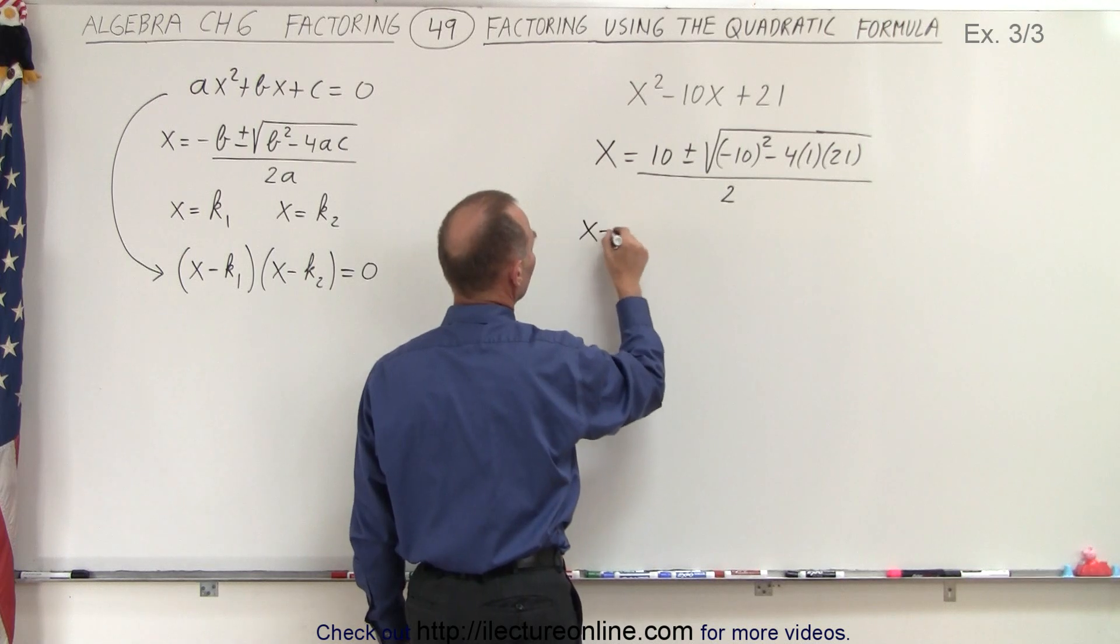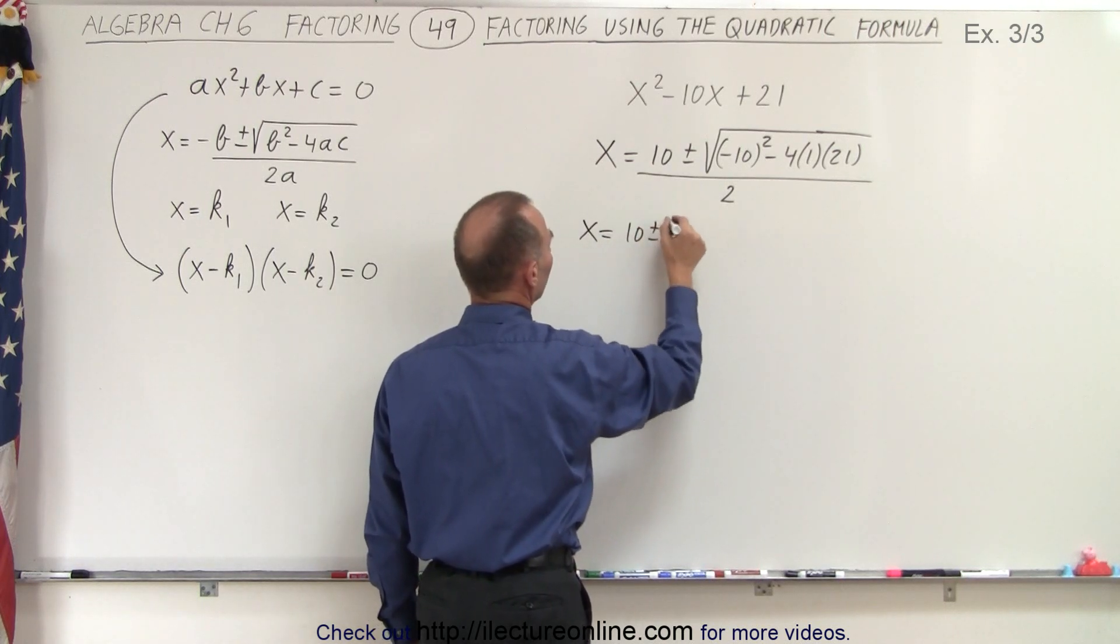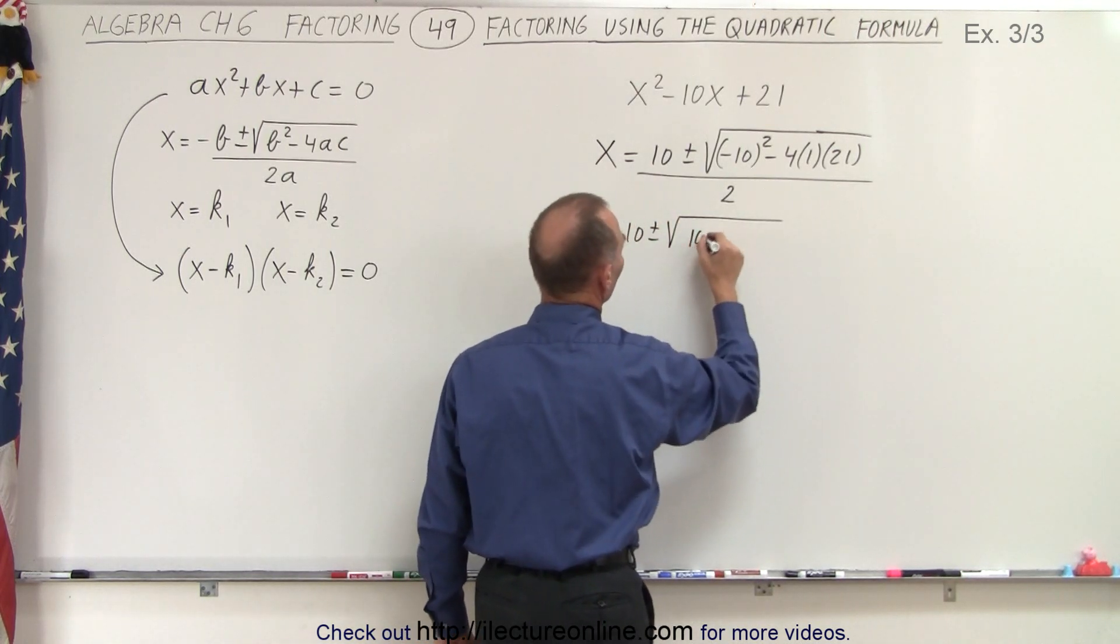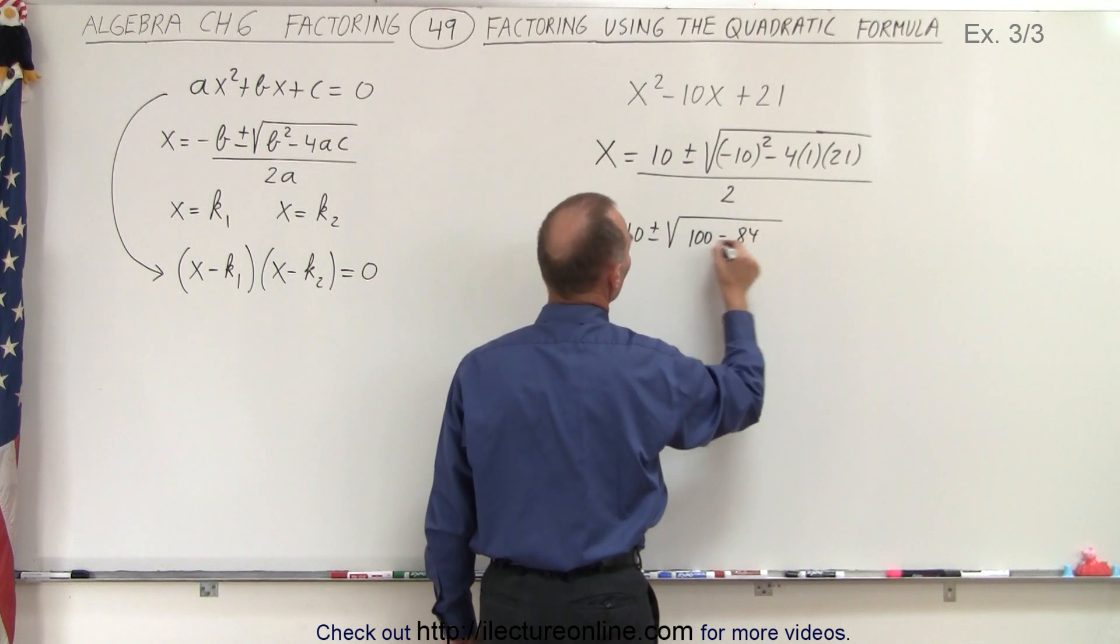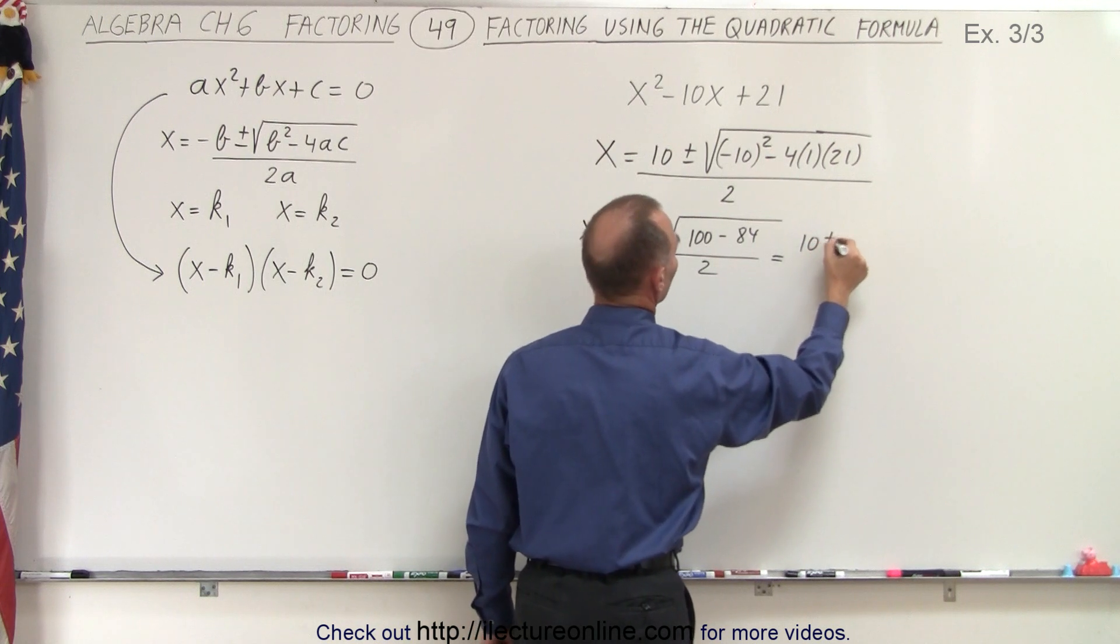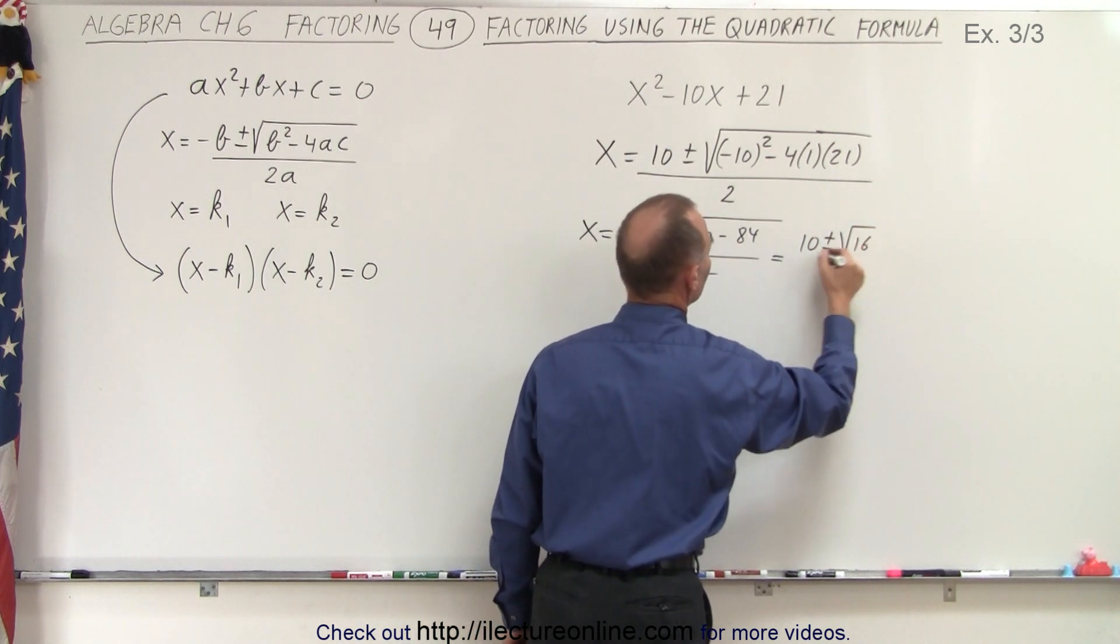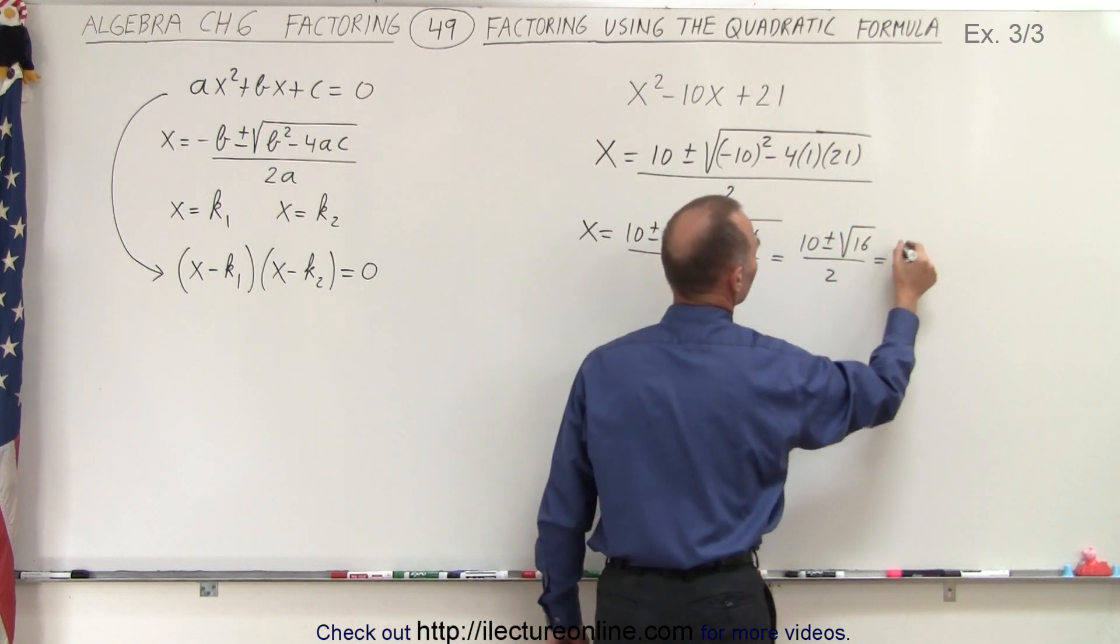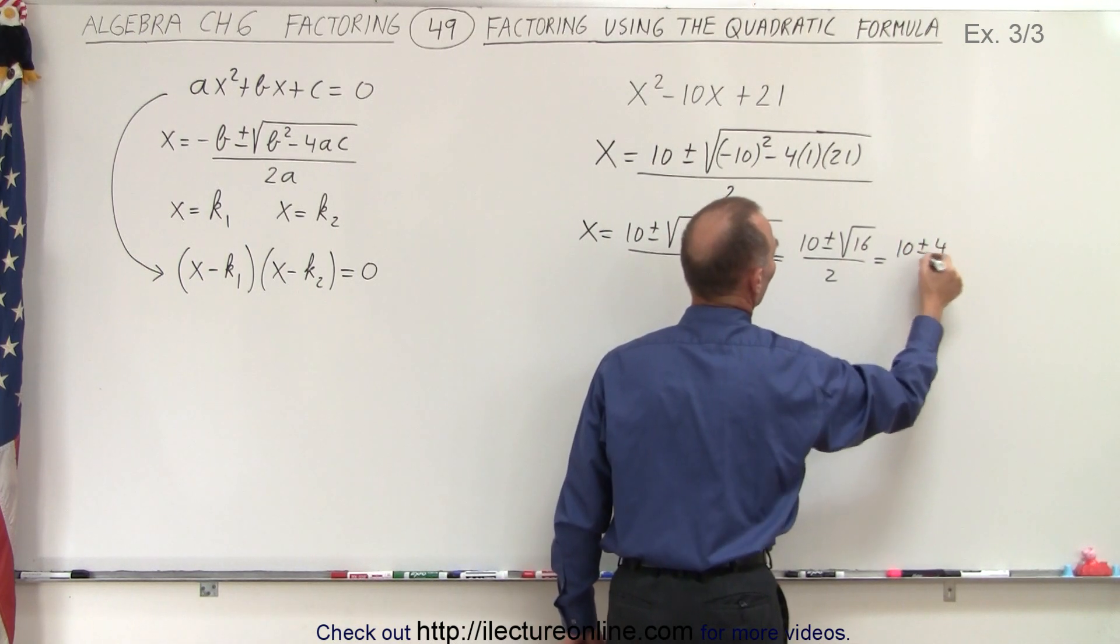Simplifying that, we get x is equal to 10 plus or minus the square root of 100 minus 84 divided by 2, which can be simplified to be 10 plus or minus the square root of 16 divided by 2, which is equal to 10 plus or minus 4 divided by 2.